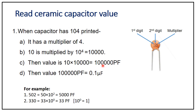As discussed, using the 1st digit, 2nd digit, and multiplier, the result is in picofarads. We can also represent this in microfarads by dividing by 10 raised to 6, giving 0.1 microfarad. So the value of 104 is 100,000 picofarads or 0.1 microfarad.